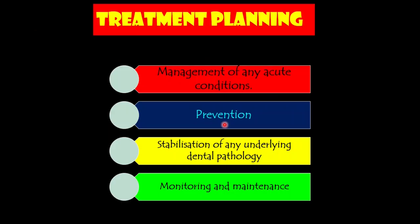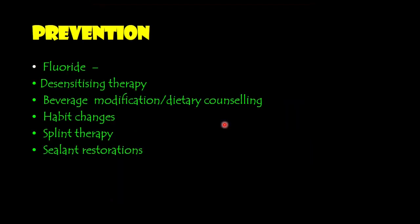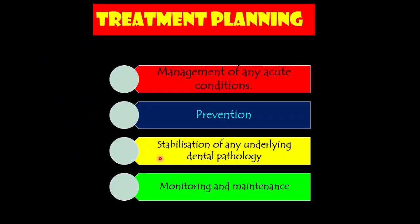Regarding treatment planning: first, manage any acute condition — such as flattening of cuspal inclines or removing faulty occlusal interferences. Next is the preventive phase: fluoride application, desensitization therapy, dietary counseling and beverage modification, habit changes, splint therapy where parafunctional habits are confirmed, saline rinses to address dentine hypersensitivity, and prevention of further non-carious cervical lesion progression. Stabilization of any underlying dental pathology includes caries control and removal of any hopeless teeth. The next phase is monitoring and maintenance — a very important and challenging task.